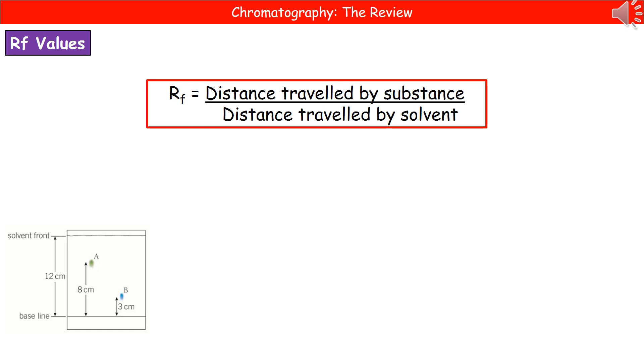If you have a look at the little picture in the bottom there, we've got two spots. The green spot A, which is eight centimeters, and the blue spot B, which has traveled three centimeters.